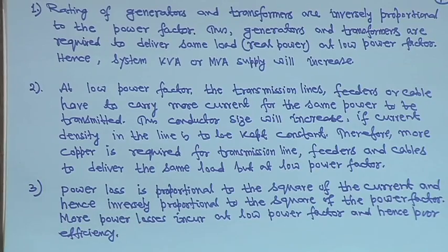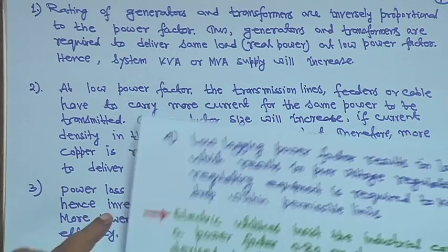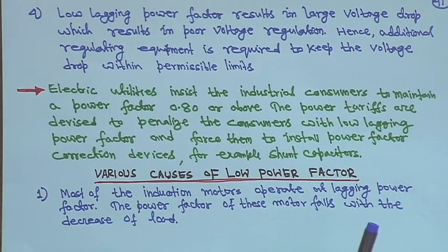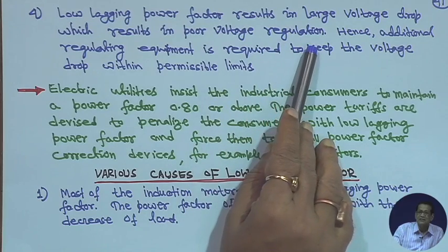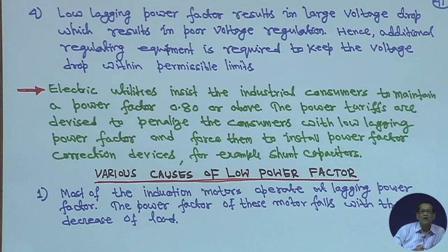Number four: low lagging power factor results in large voltage drop, which results in poor voltage regulation. Hence, additional regulating equipment is required to keep the voltage drop within permissible limits. So all these are the disadvantages of poor power factor.